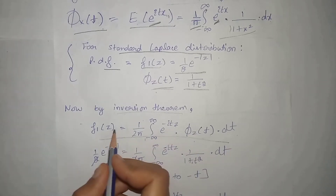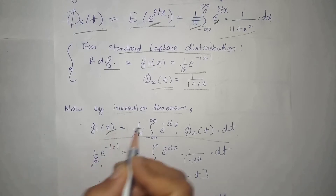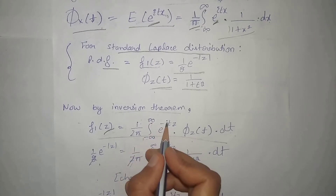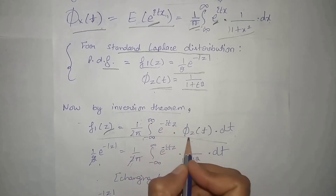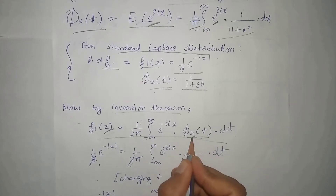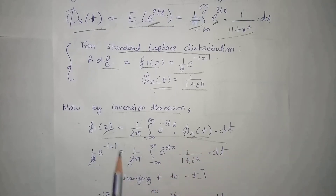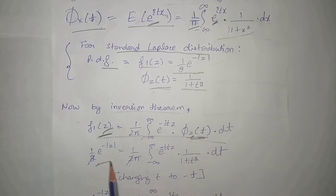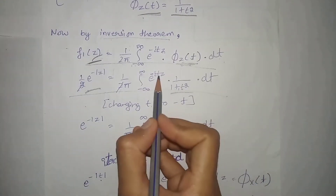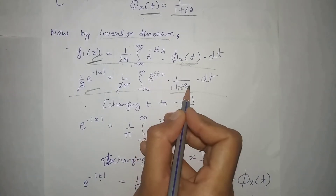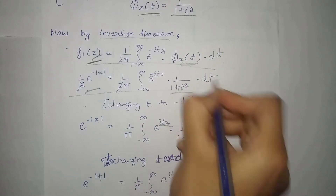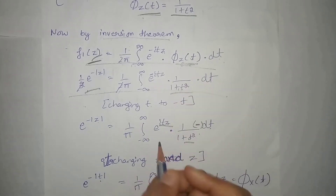That is, 1 over π times the integral from minus infinity to infinity of e raised to power minus iota tz, which is the characteristic function of the standard Cauchy distribution, where z is the standard Cauchy variable. Putting both values, next we put minus t in place of t in this whole relation. So t becomes minus t here, making the term positive because it is squared.